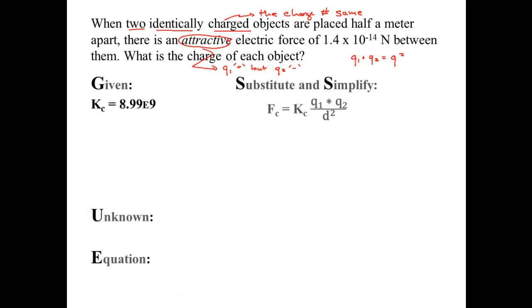So I have Coulomb's constant, 8.99 times 10 to the 9. I have a force is 1.4 times 10 to the negative 14 newtons. And here is my distance, half a meter. So I have distance equals 0.5 meters. I'm looking for Q1, which equals Q2 negative.